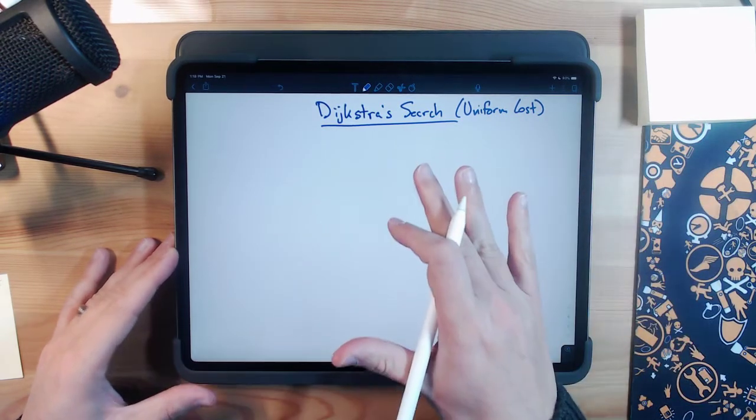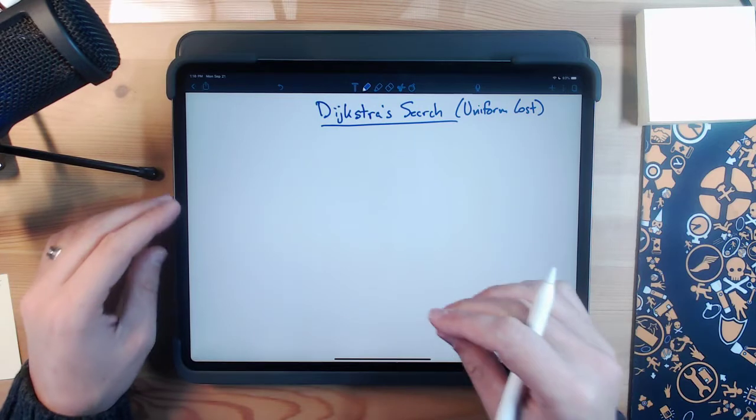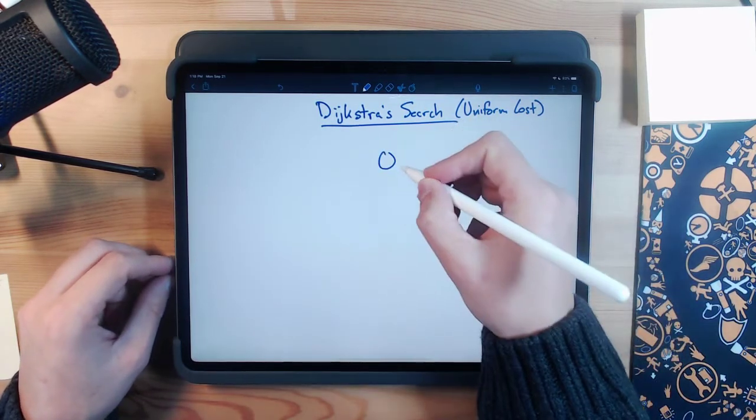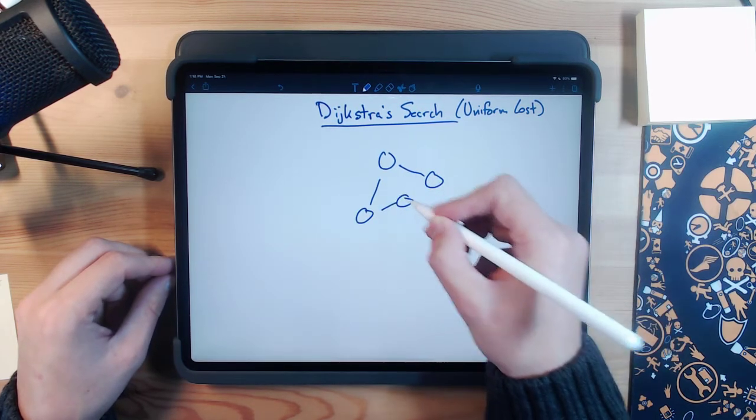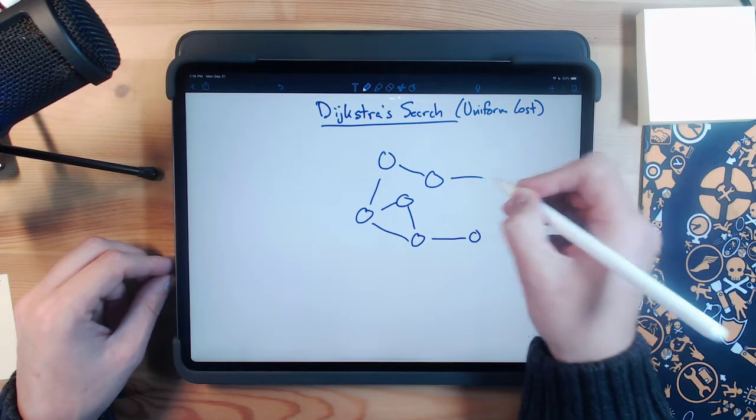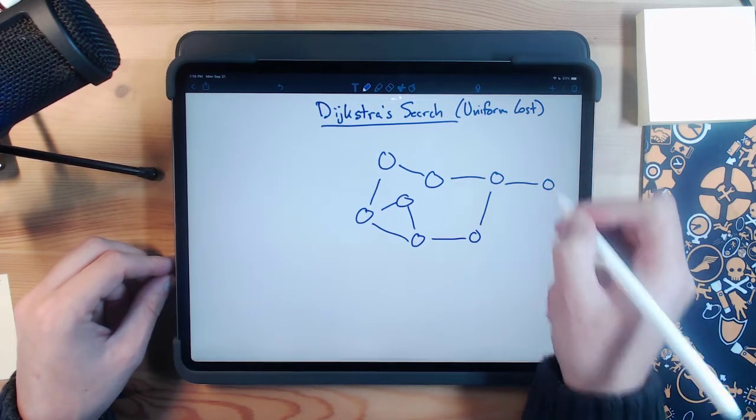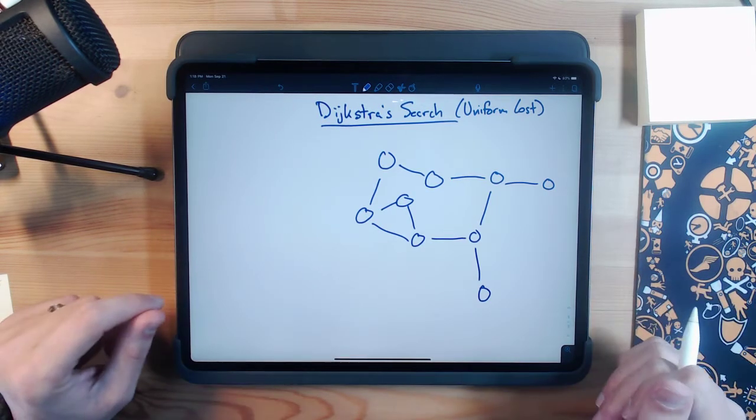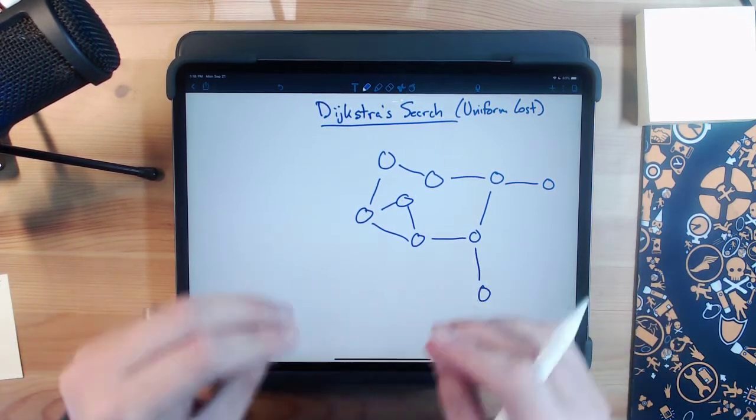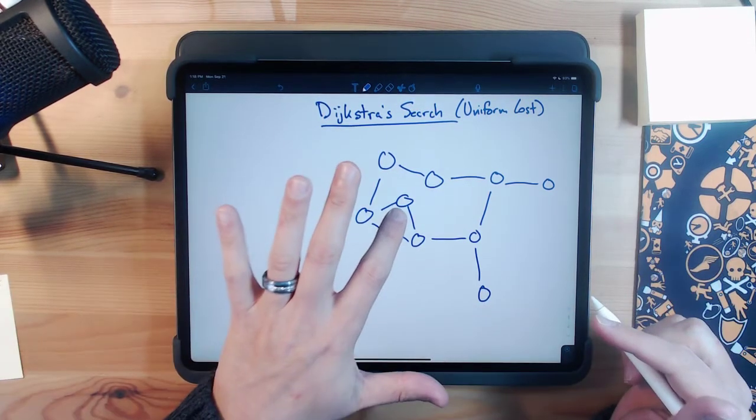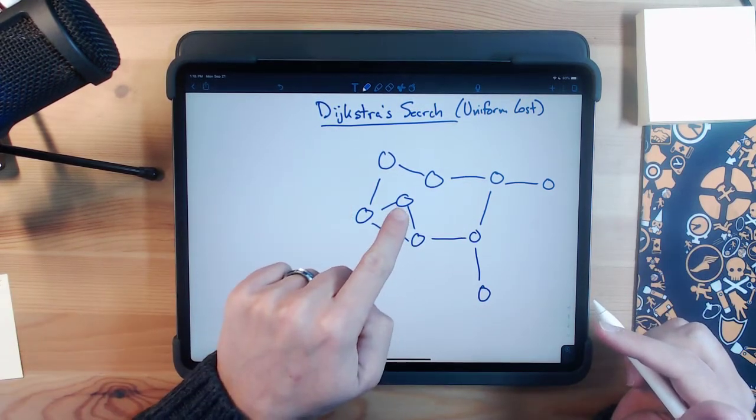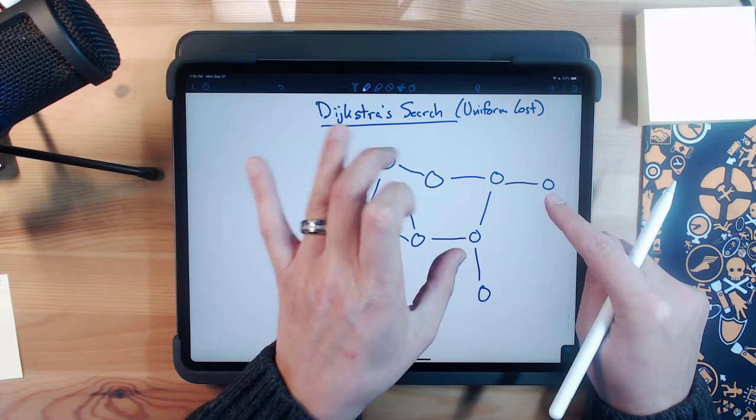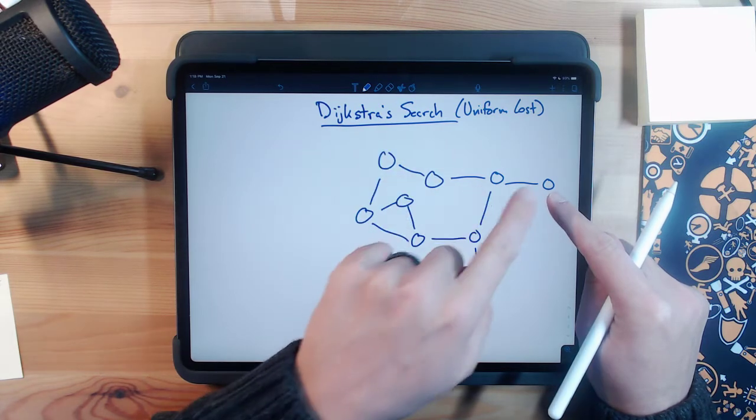Dijkstra's search has some benefits over doing a simple breadth-first search for graph data structures. If we imagine a graph that might look something like this, here's our connected graph. If we were to do a breadth-first search on this, remember our breadth-first search would expand out in all directions evenly. So as an example, if this was our start node here and this was our goal node, our breadth-first search would first explore these two, then these two, then these two as well as that one, and then finally reach our goal.